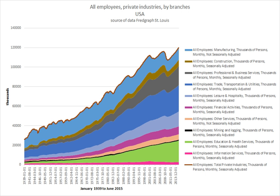Employees work in return for payment, which may be in the form of an hourly wage, by piecework or an annual salary, depending on the type of work an employee does or which sector she or he is working in. Employees in some fields or sectors may receive gratuities, bonus payment or stock options.